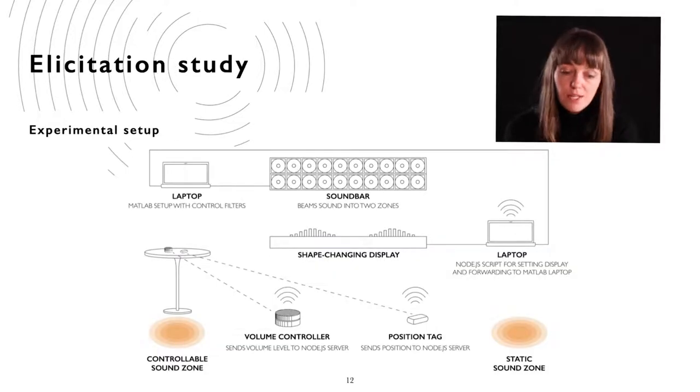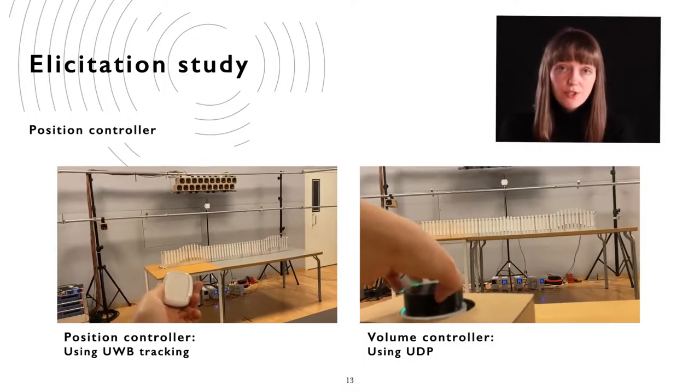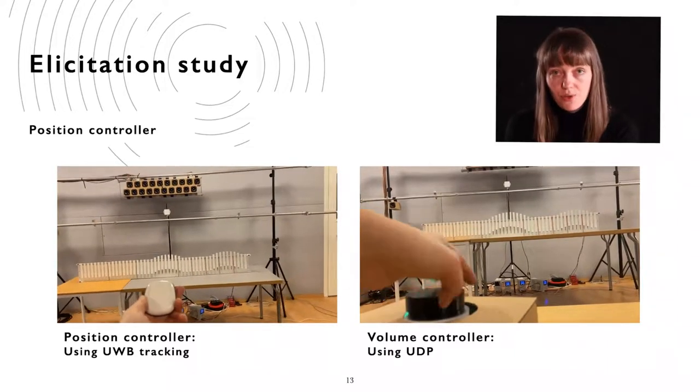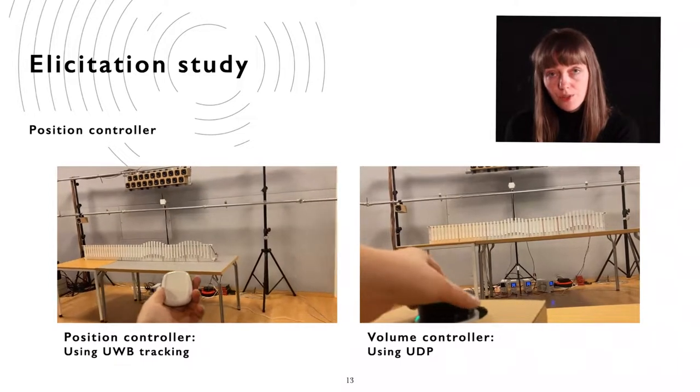The study took place in a lab with two active sound zones where we recorded both video and audio. We placed two controllers in front of participants, which controlled the position and volume of one of the sound zones. We used an ultra-wide band positioning tab to determine the position of the sound zone, and a rotary potentiometer for volume.